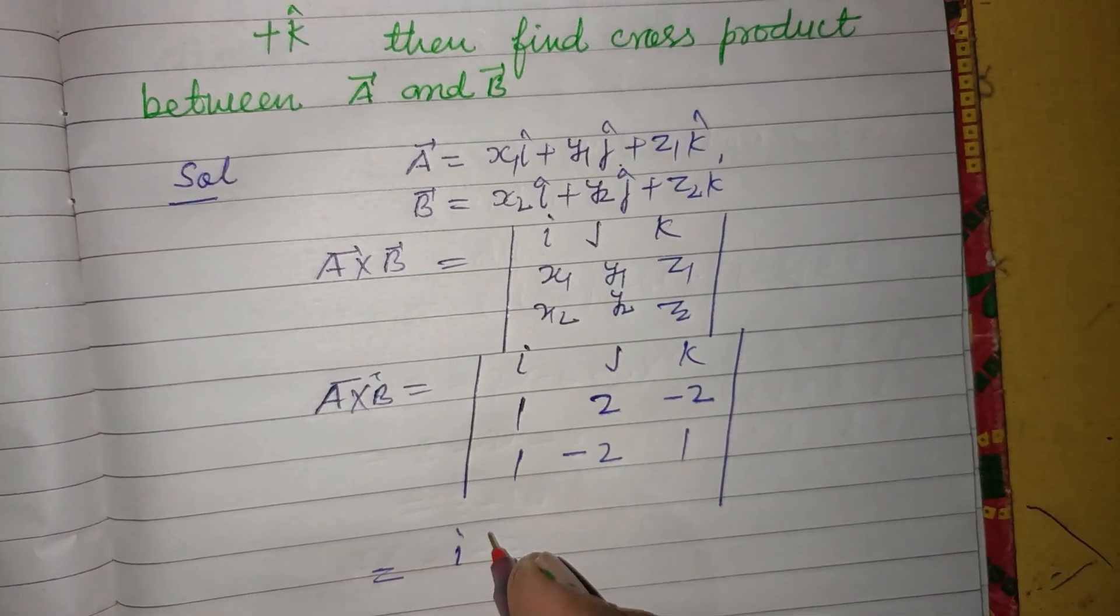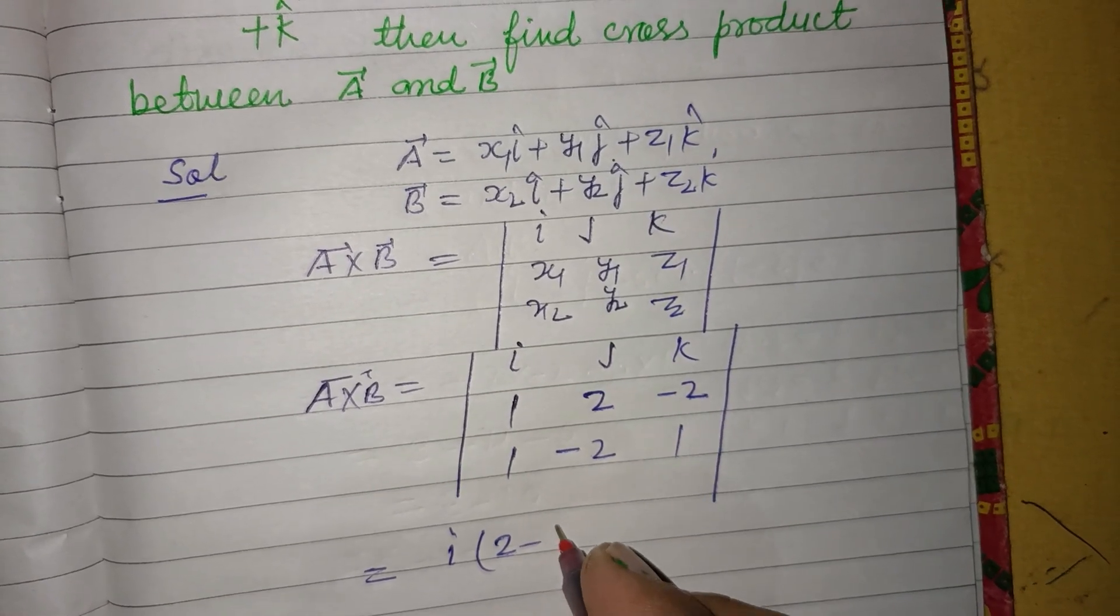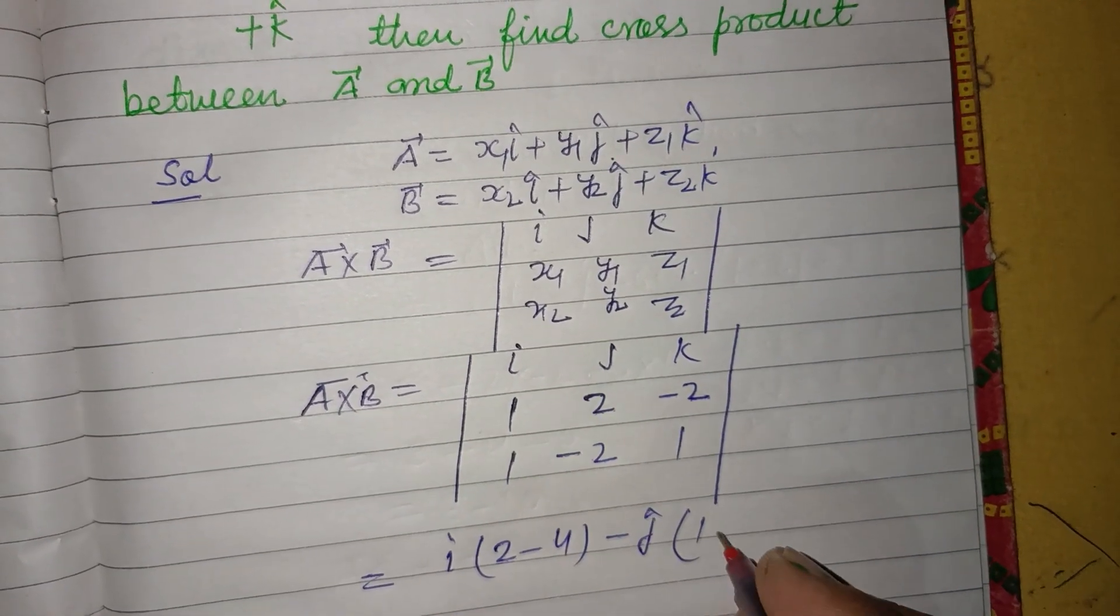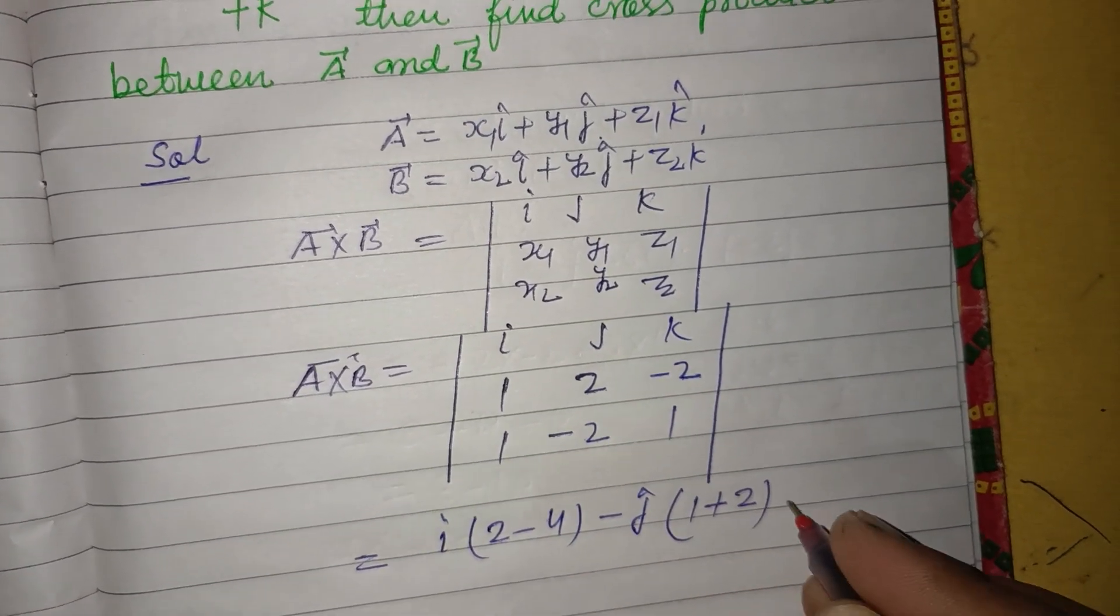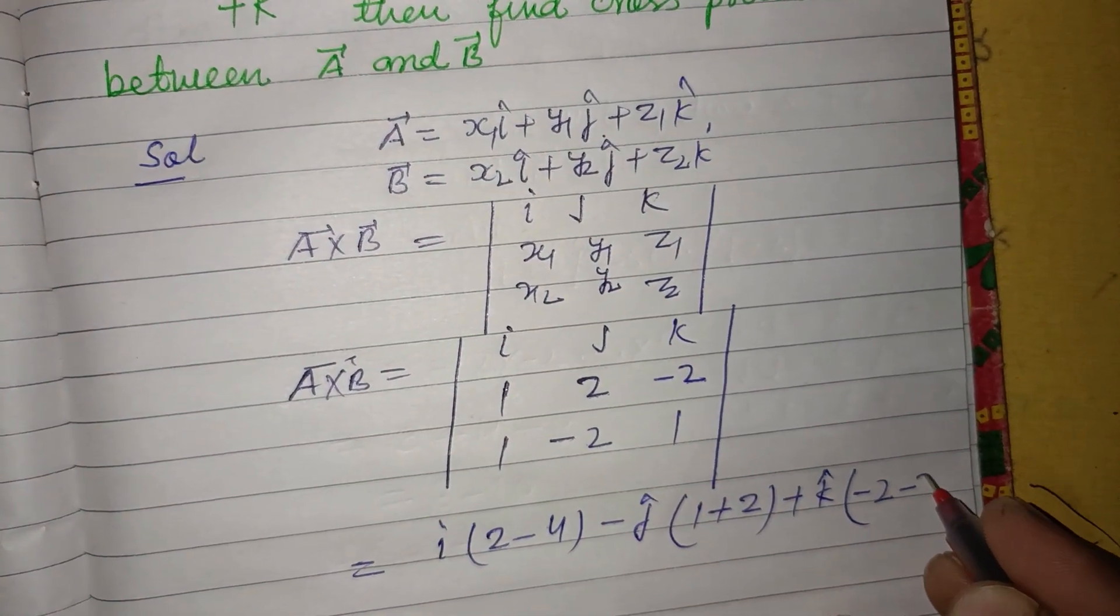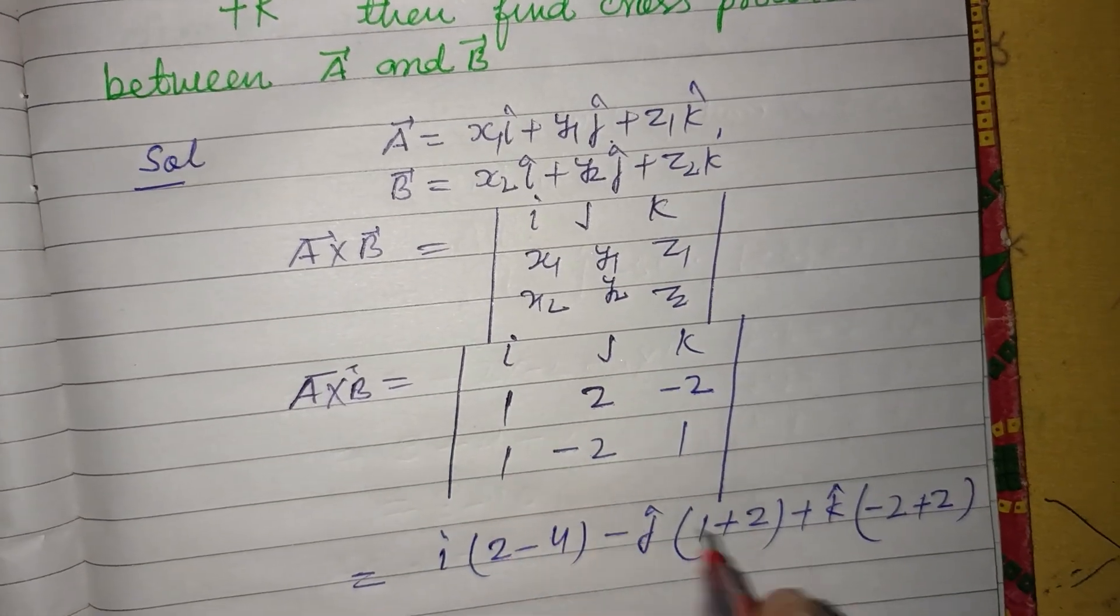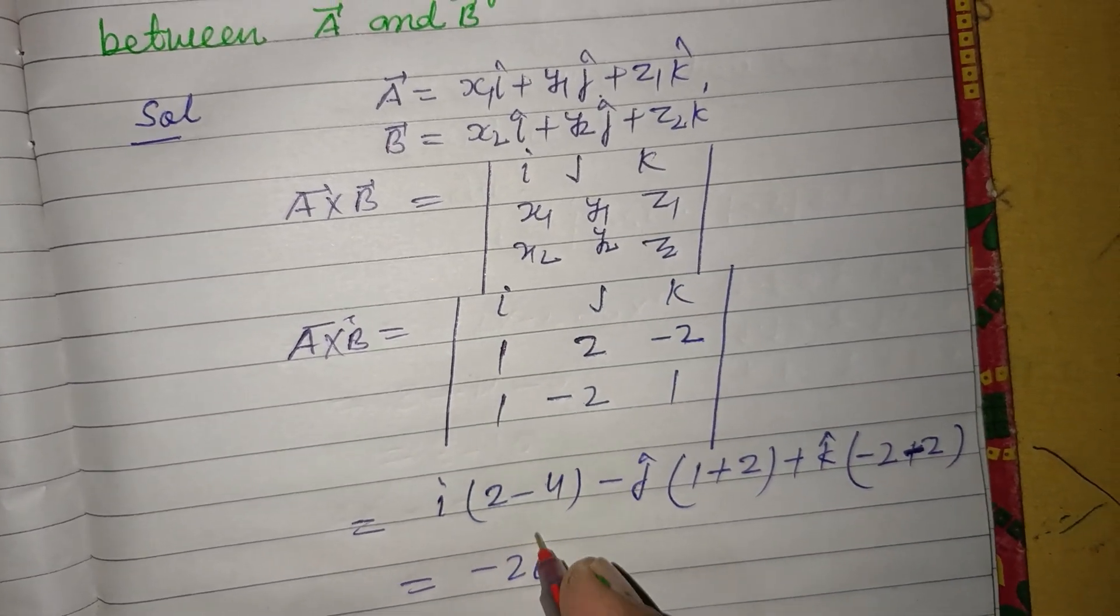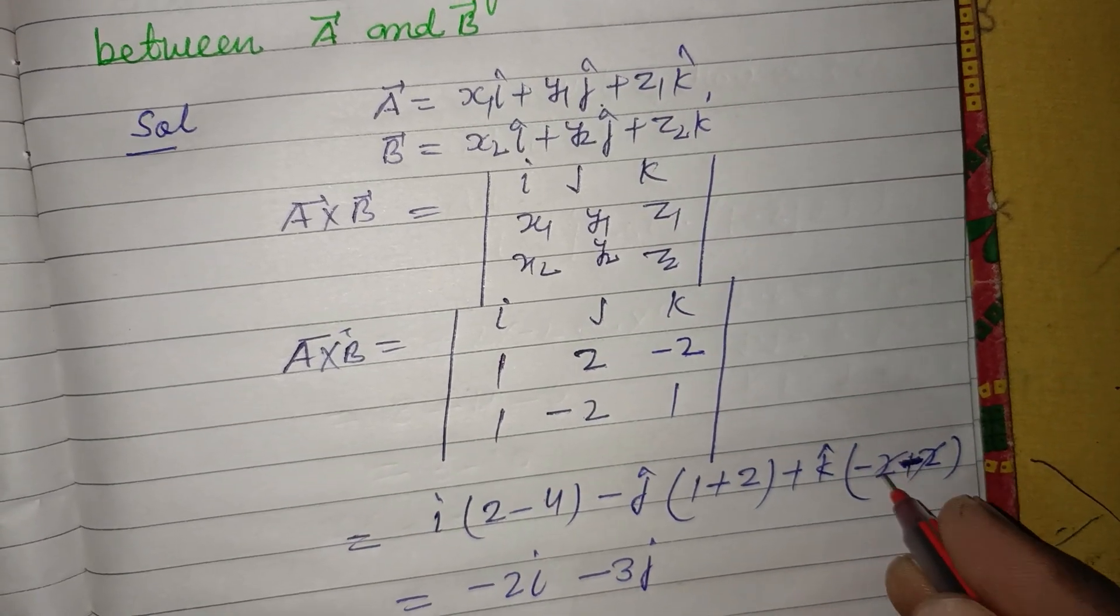So on cross multiplication, this is i times (2 times 1 minus minus 2 times minus 2, which is 2 minus 4), minus j times (1 times 1 minus minus 2 times 1, which is 1 plus 2), plus k times (1 times minus 2 minus 2 times 1). This equals minus 2i cap minus 3j cap minus 4k cap.